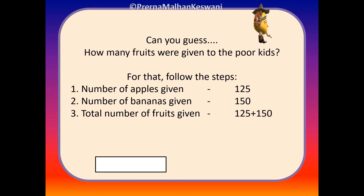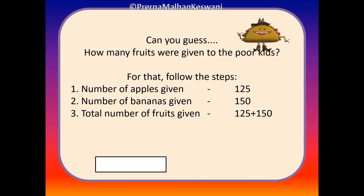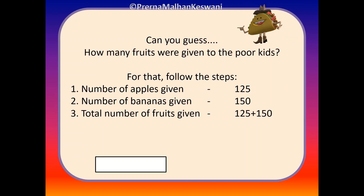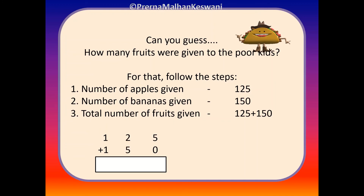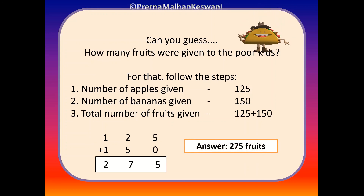Now children, why are we putting a plus sign here? Yes, because we need to find the total number of fruits given. That's why we need to add the number of apples and bananas. When we add 125 with 150, we get 275 fruits as the answer.